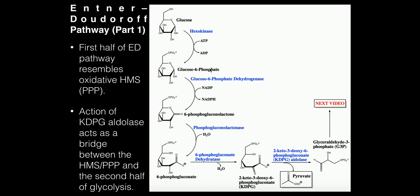Glucose-6-phosphate is going to be oxidized by glucose-6-phosphate dehydrogenase. This enzyme uses the oxidizing power of NADP and takes the hydroxyl group at the one position and converts it into a carbonyl — taking it up one oxidation state. The product is 6-phosphogluconolactone, and we also get an NADPH. This is actually one method that the bacteria can use to generate NADPH, which is often used in biosynthetic reactions.